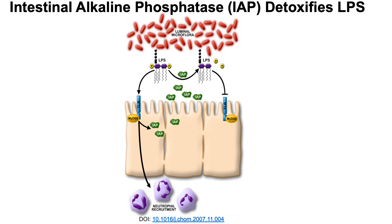Intestinal alkaline phosphatase is found in the intestine and has been shown to detoxify LPS. How it detoxifies LPS is partly encoded in its name — it's a phosphatase. LPS has phosphate groups in its lipid A core, and IAP dephosphorylates and removes them, thereby reducing LPS activity. The luminal microflora contain bacteria with LPS, and IAP removes the phosphate groups shown in yellow, detoxifying the molecule.